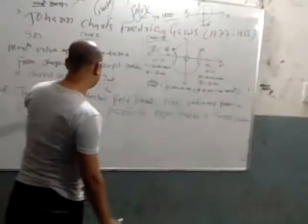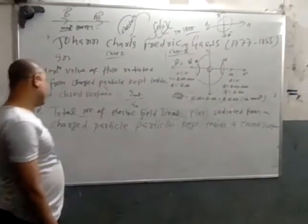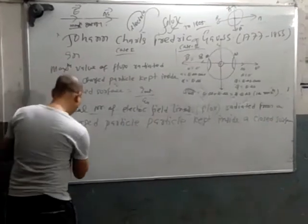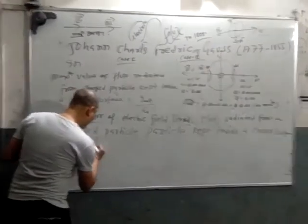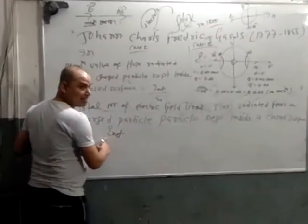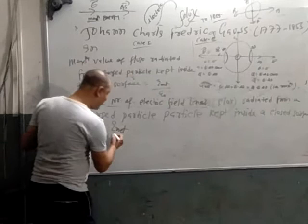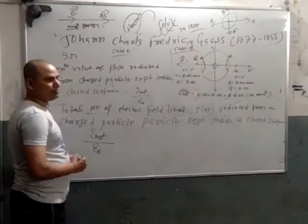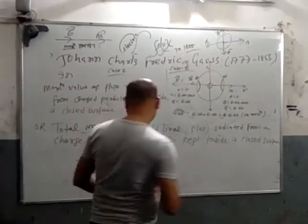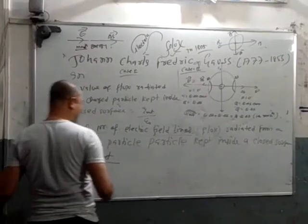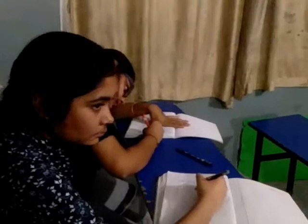So the total number of electric field lines radiated from a charged particle kept inside a closed surface is equal to the net inside charge divided by ε₀. This flux does not depend on the shape of the container — that surface is called the Gaussian surface.